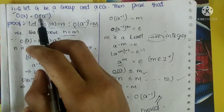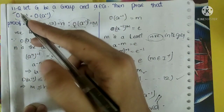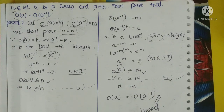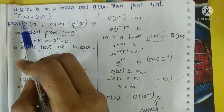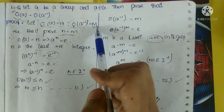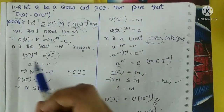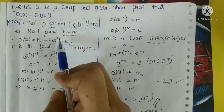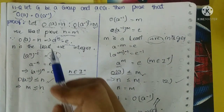Let me explain one more time. In our question, O(A) = N means A^N = E, where N is the least positive integer. So A^N = E, and N is a positive integer, and here A^N times (-1) on both sides.